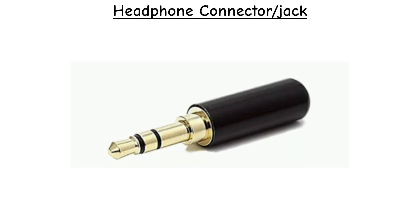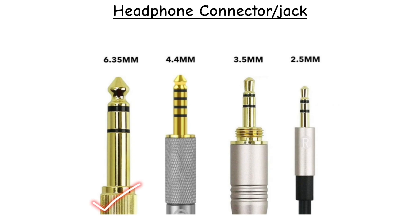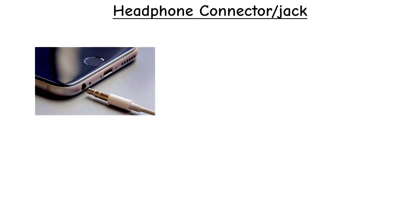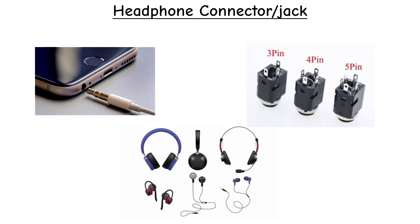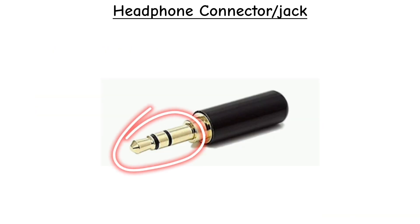Headphone connector. The headphone connector family comes in four main sizes: the large 6.35mm, common 3.5mm, compact 2.5mm, and the newer 4.4mm Pentaconn designed for balanced headphones. These appear as both jacks on devices and plugs on cables, with their metal shafts divided by insulating rings that define how many conductors they carry.